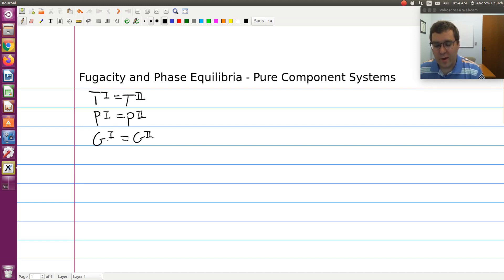So molar Gibbs free energy is great, but now we've introduced fugacity. And so fugacity has lots of desirable properties over G. And so what we want to look at here is how do we get F in our phase equilibrium criteria instead of G. And actually, it's quite simple.